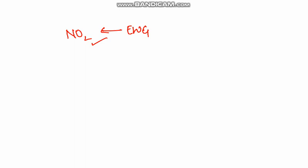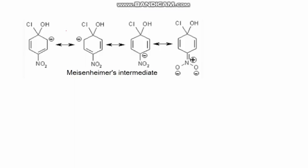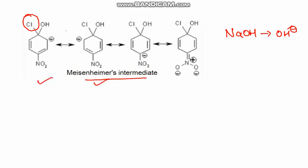So in this question, we are talking about a nucleophilic substitution reaction. When NO₂ withdraws electrons, our nucleophilic substitution reaction becomes easier. OH⁻ from NaOH will be substituted in place of Cl. Cl will leave, and these are all resonance structures showing this mechanism.